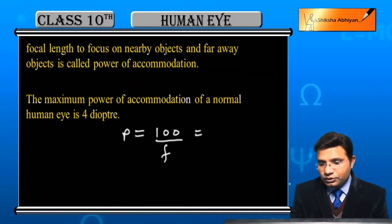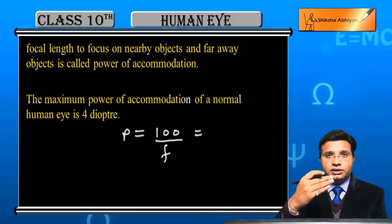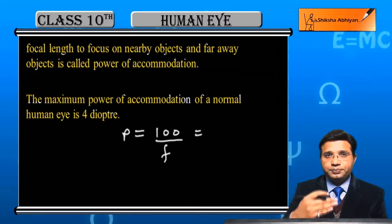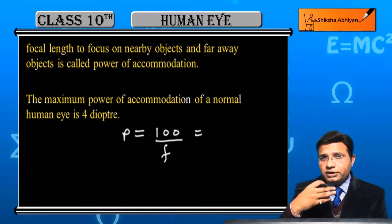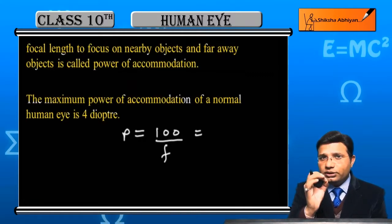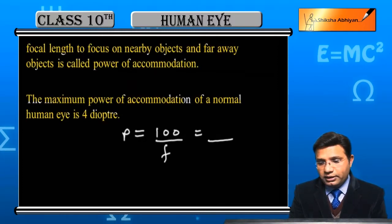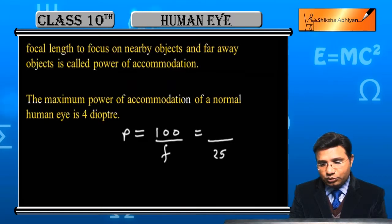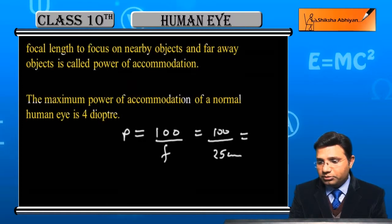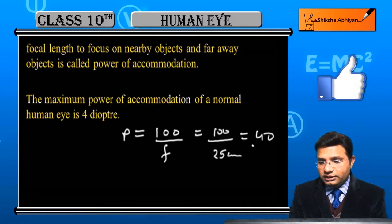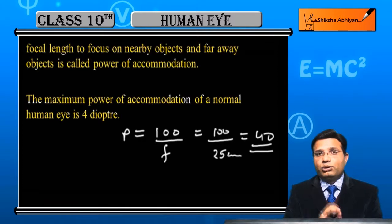जो distant object है उसका far point infinity है, और जो near point है वो 25 cm है। तो इस adjustment की range के हिसाब से देखें — पास की range 25 cm है, उसी को हम focal length मान लेते हैं। जब 100 से divide करते हैं पावर निकालने के लिए — 100 upon 25 — तो हमें मिलता है 4, जिसकी unit है D यानी diopter। तो 4 diopter इस तरह से power की value आ जाती है।